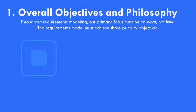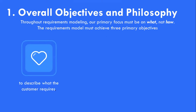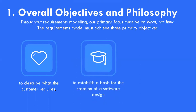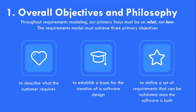The requirement model acts as a bridge between the system description and the design model. It must achieve three primary objectives: to describe what the customer requires, to establish a basis for the creation of the software design, and to identify a set of requirements that can be validated once the software is built. The analysis model bridges the gap between the system-level description — which describes overall business functionality achieved by applying software, hardware, data, humans and other system elements — and software design, which describes the software application architecture, user interface, and component-level structures.